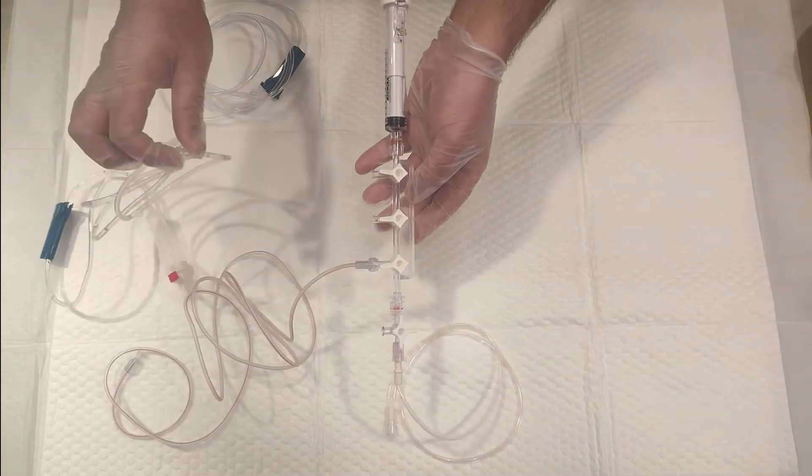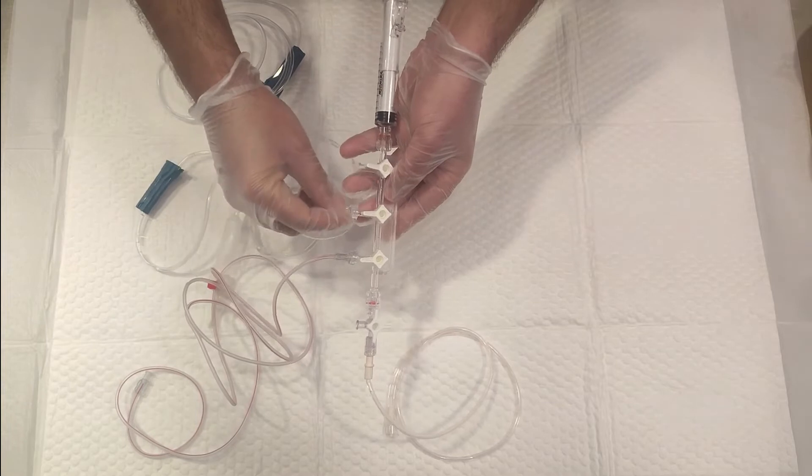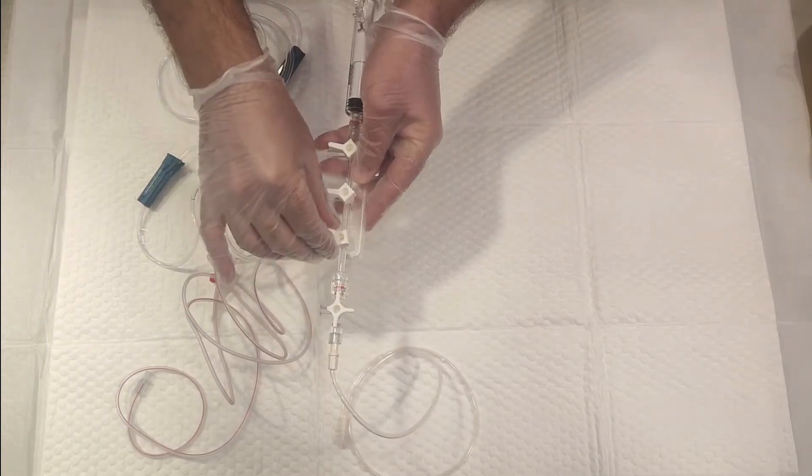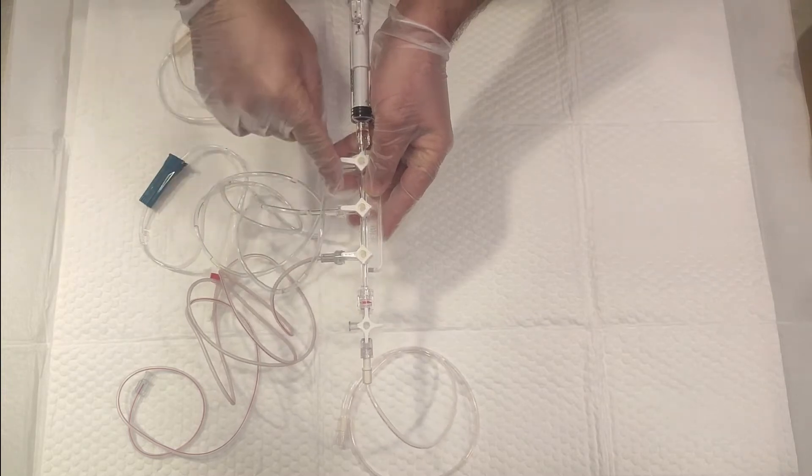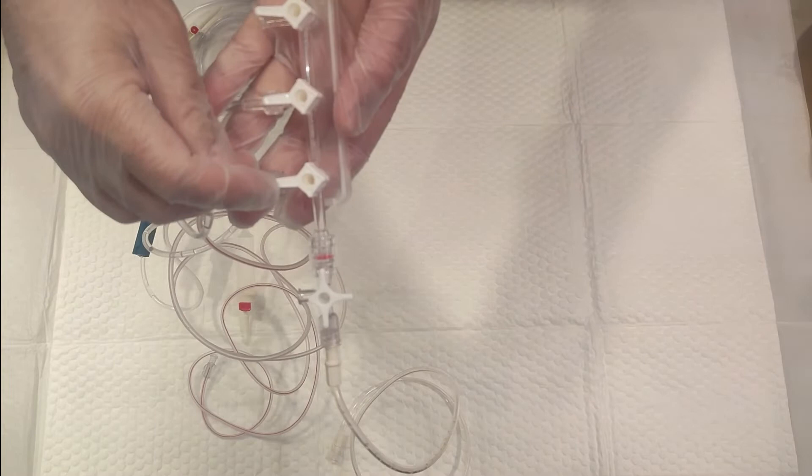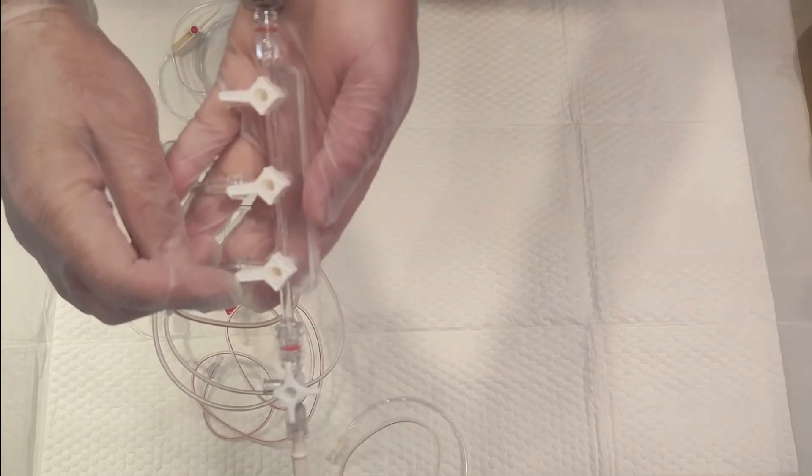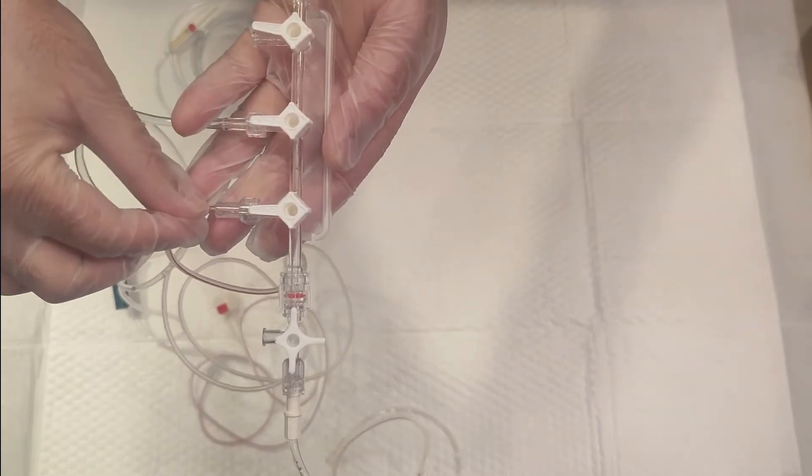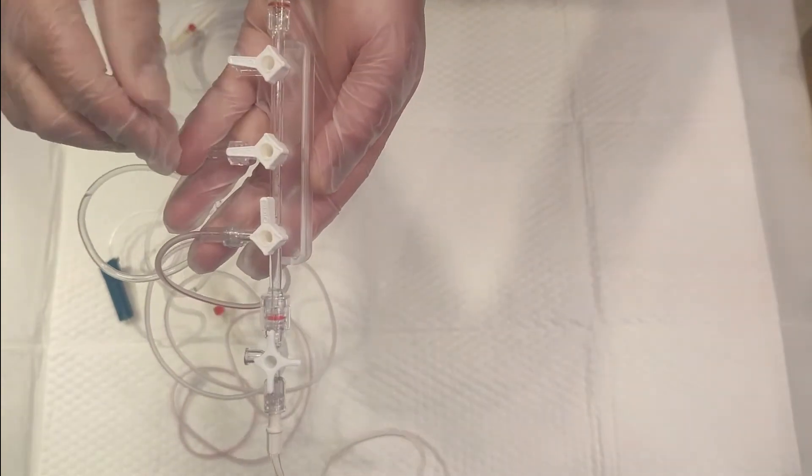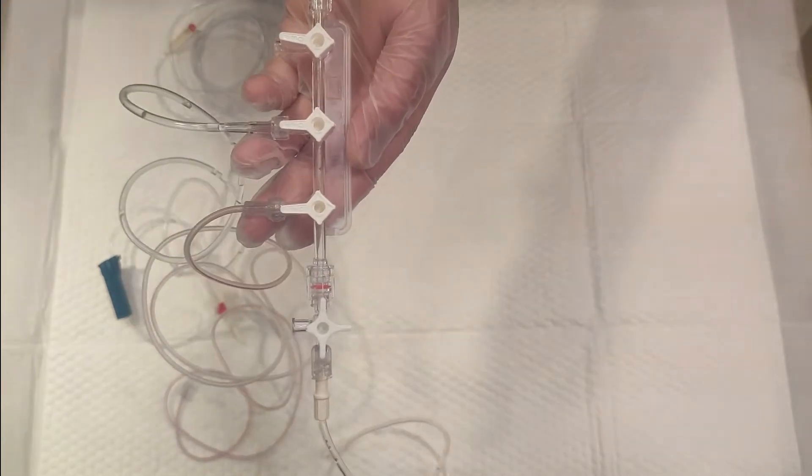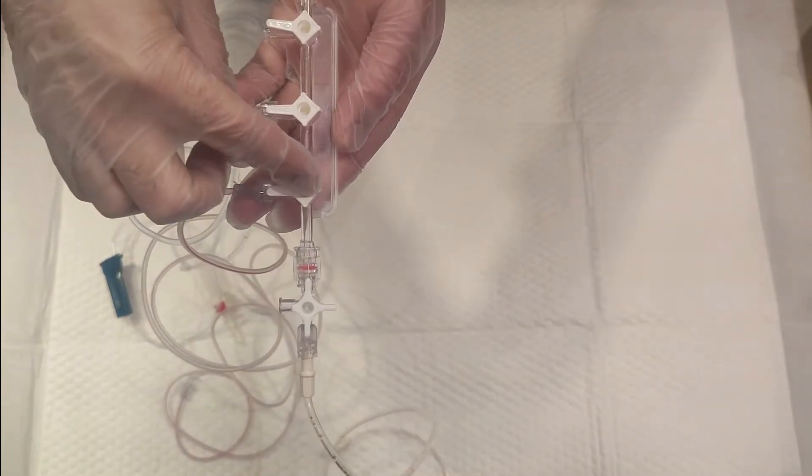The second one is the saline tubing line, similar to this. This sign means it's locked towards the pressure. As you can see here, it's written clearly: 'off' means off towards any side. If it's like this, it's off towards the operator. If it's this way, it's off towards the pressure monitoring. The other ports are open.